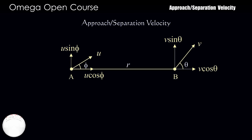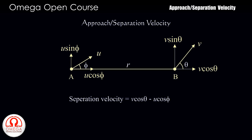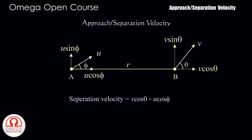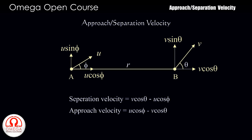The direction of the radial component of B is such that it will increase the separation between the two particles, while A will decrease the separation. Therefore, the separation velocity between A and B is V cos theta minus U cos phi. Alternatively, we can say that A is approaching with speed U cos phi while B is getting away with speed V cos theta, so the approach speed between the two particles is U cos phi minus V cos theta.